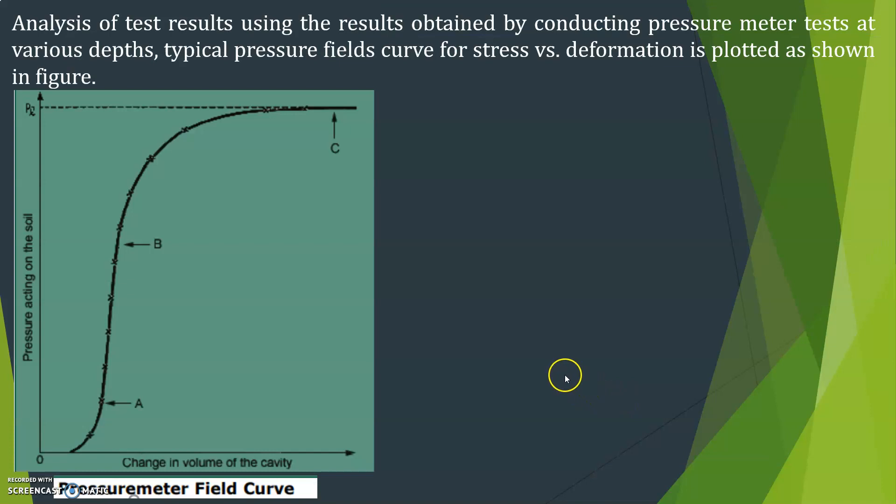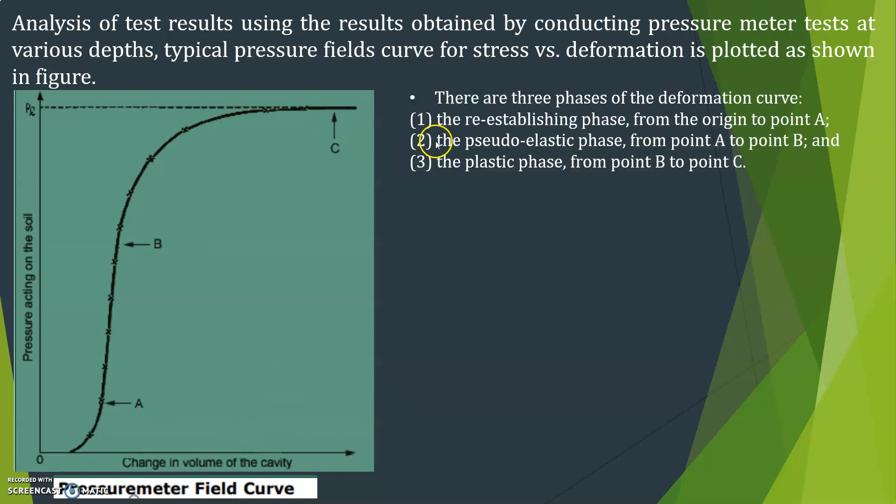Analysis of test results using the results obtained by conducting pressure meter test at various depths. Typical pressure fields curve for the stress versus deformation is plotted as shown in the figure. So this is pressure acting on the soil, change in volume of the cavity. There are three types of soils shown here A, B and C. There are three phases of deformation curve.